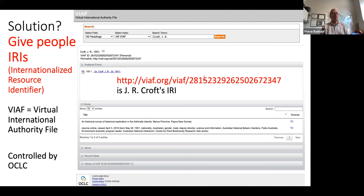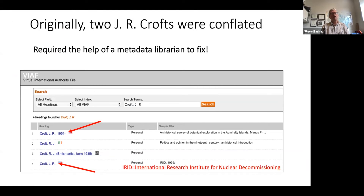There is one kind of IRI called Virtual International Authority File, or VIAF. It's generated by OCLC, and they assign these identifiers to people. This system is curated, but still isn't without error. When I was looking up Jim Croft, I found one J.R. Croft who is the botanist I was interested in, and another involved in nuclear decommissioning — clearly a different person. The problem was there wasn't any way I could fix this myself; I had to go to a metadata librarian to get it corrected.